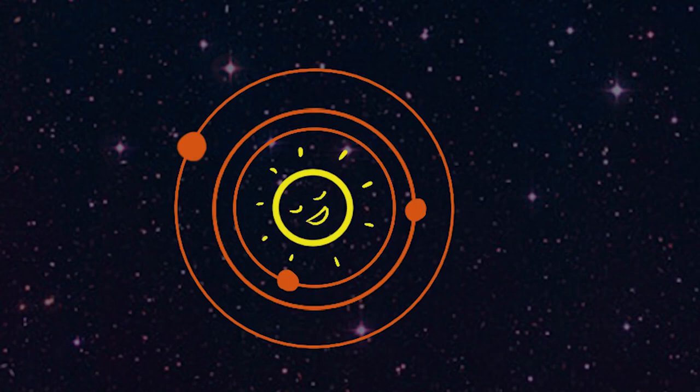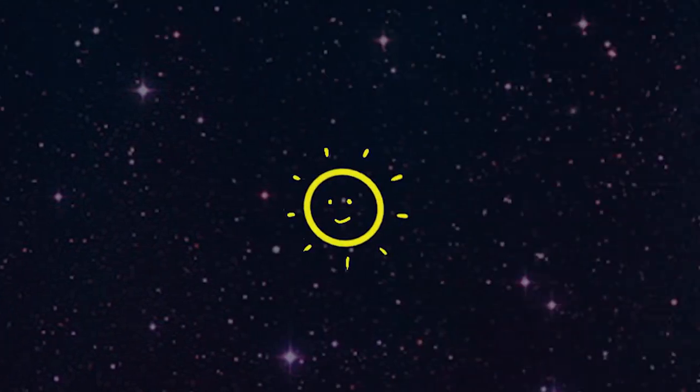This is a star. It has a few planets in its orbit. And this is a star without planets.